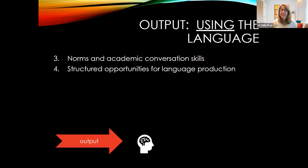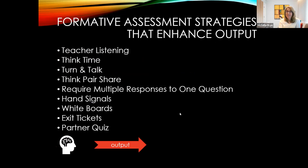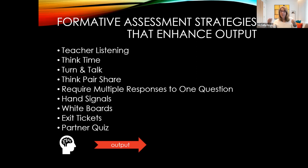We've talked about the two different inputs for language development in mathematics. Now we're going to talk about output — using the language in mathematics. The first output is norms and academic conversation skills, and the second is structured opportunities for language production. When we look at formative assessments to enhance outputs, these include: teacher listening to students, giving think time, using turn-and-talk or think-pair-share, requiring multiple responses, using hand signals like thumbs up or thumbs down, whiteboards, exit tickets, and partner quizzes.